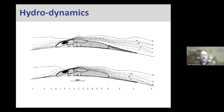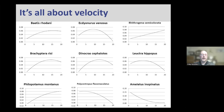Different species have different tolerances to fast-flowing water, all about water velocity. Rithrogena semicolorata, with its overlapping gills, just stays on no matter how fast the current. Other species like Baetis rhodani and Ecdyonurus are okay to a point then drop off. Species like Ameletus and Habrophlebia prefer slower-flowing water, which is why they're found in the slower pools and glides.